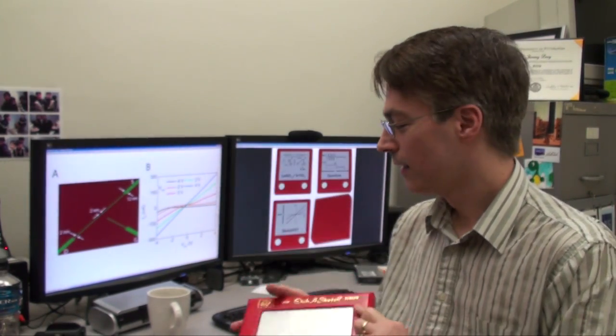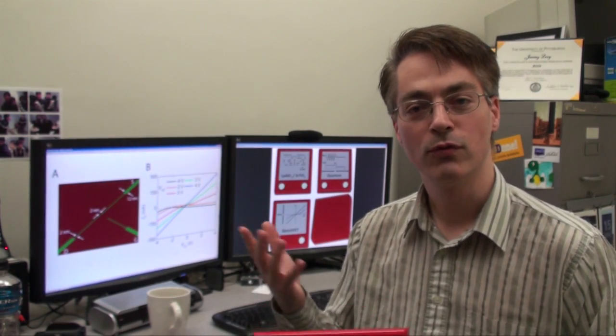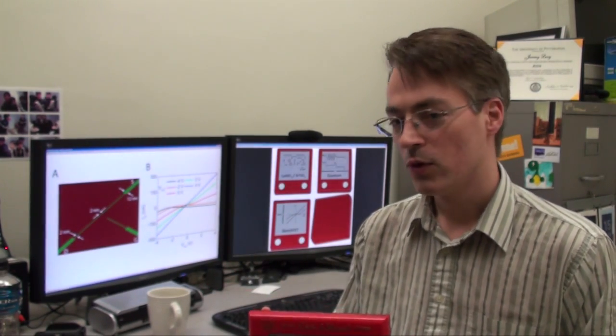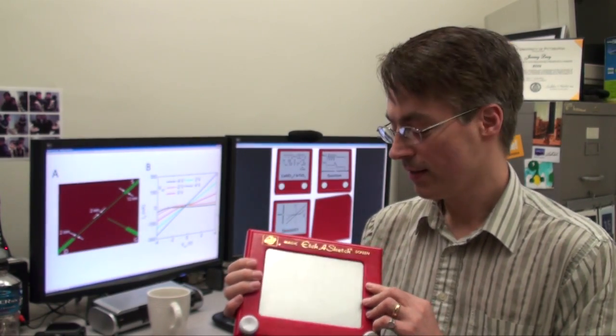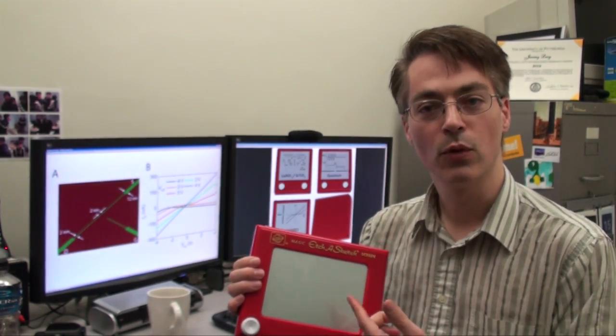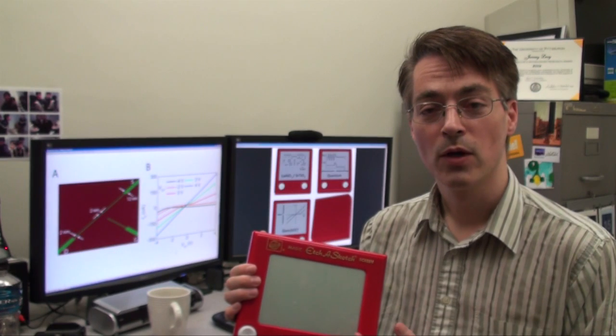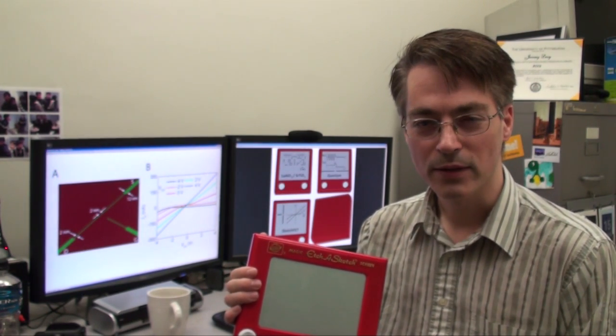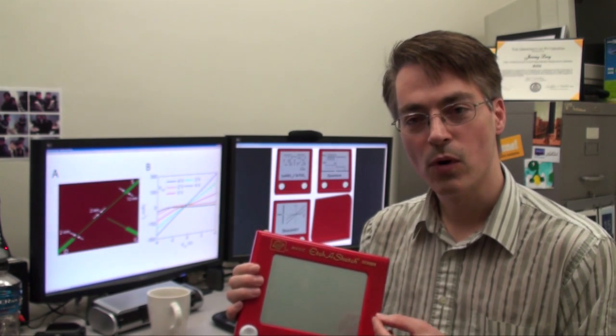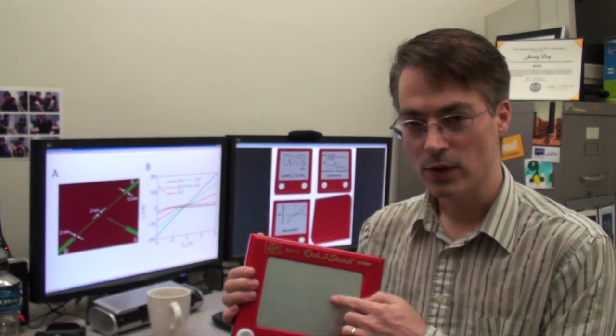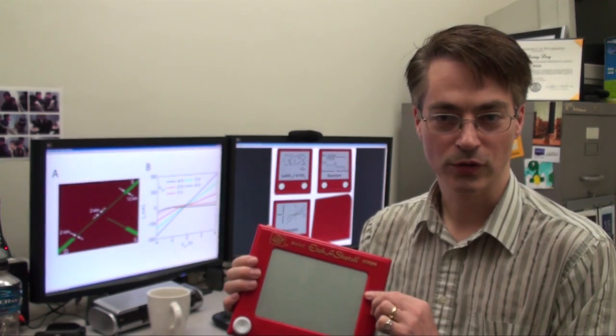Yes. The same thing is actually true for the system that we're looking at. We can write structures that are much smaller than what you see here. This is on the order of maybe a millimeter. What we can draw is on the order of a nanometer. So that's actually a trillion times smaller area than what you can make with this children's toy.